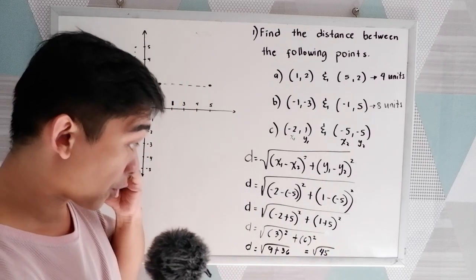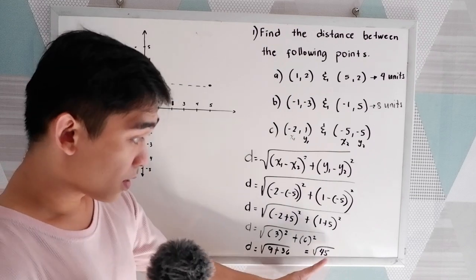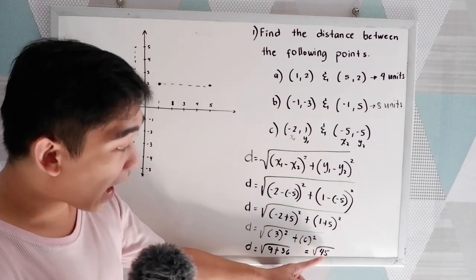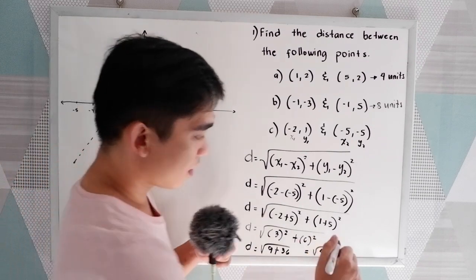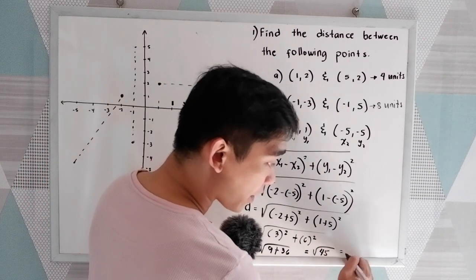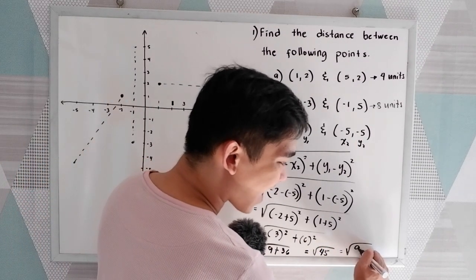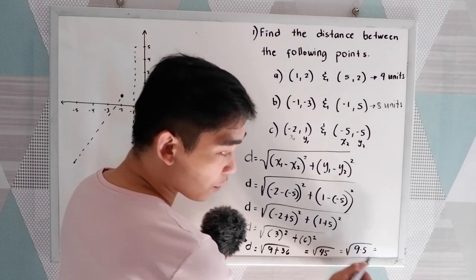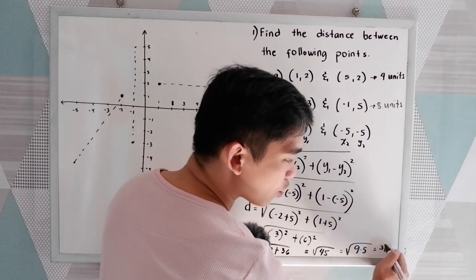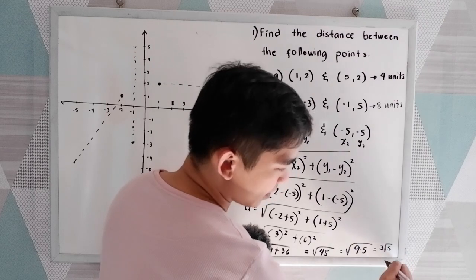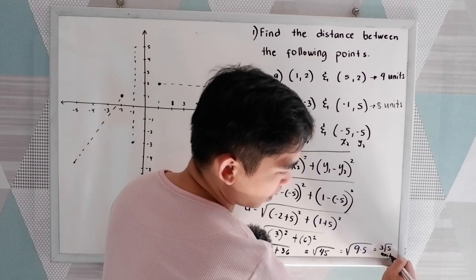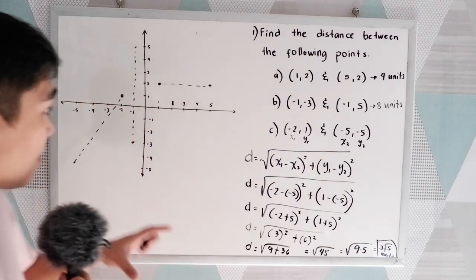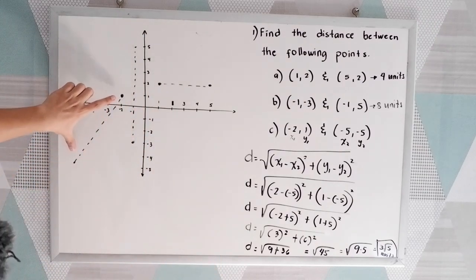So we have the square root of 45. To simplify, get the factors of 45 — one factor must be a perfect square number. That is 9 times 5. So for our final answer, square root of 9 is 3, giving us 3√5 units. That would be the distance between the two points.